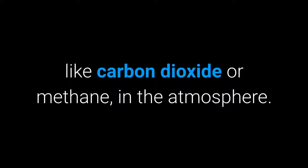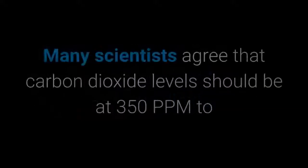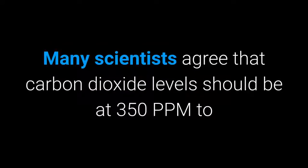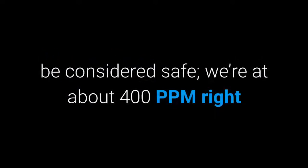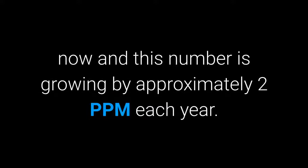13. PPM. PPM stands for Parts Per Million, which is a way of expressing the concentration of one component in a larger sample. Climate scientists and activists use the term to describe the concentration of pollutants like carbon dioxide or methane in the atmosphere. Many scientists agree that CO2 levels should be at 350 ppm to be considered safe — we're at about 400 ppm right now, and this number is growing by approximately 2 ppm each year.